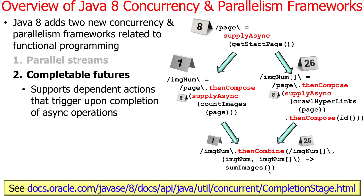This structure is essentially a fork: two things run asynchronously in parallel. Then they are joined back together using a thenCombine operation, which says: when this future is done and all those other futures are done, combine the results and sum up the total image count. This allows you to asynchronously program computations that are triggered when other asynchronous operations complete — that's what completable futures enable.